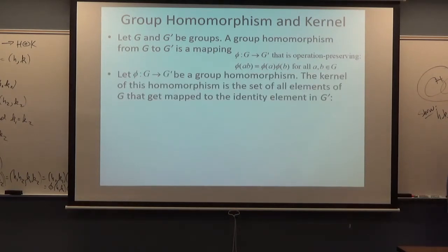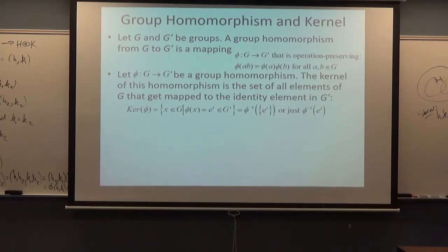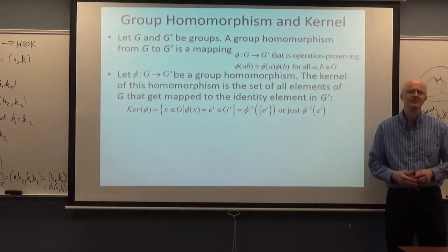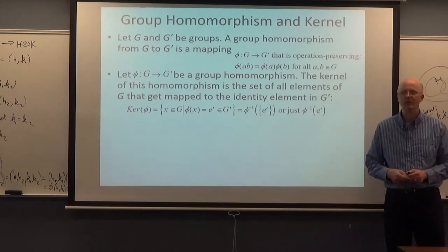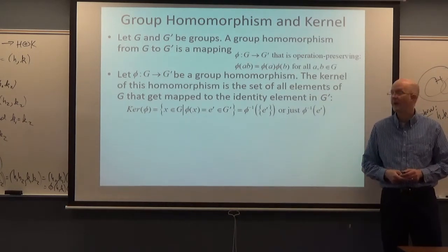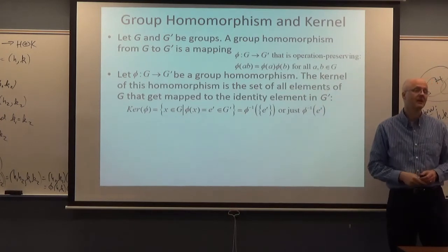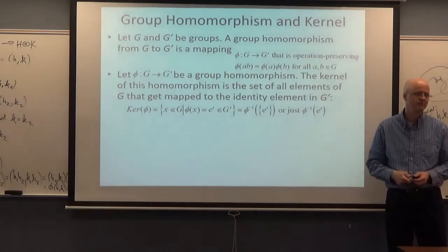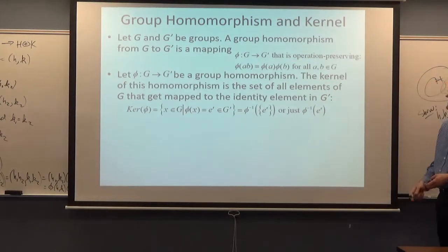The kernel is analogous to the null space in linear algebra. It's the set of elements in the domain that get mapped to the identity in the codomain. If the codomain's operation is addition, we'd use zero instead of e′. Vector spaces are groups under addition, ignoring scalar multiplication, so a linear transformation is also a group homomorphism and the kernel equals the null space.